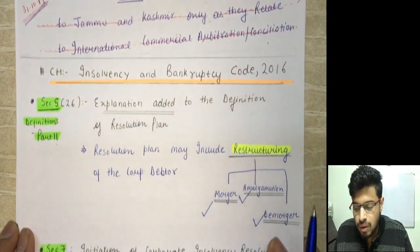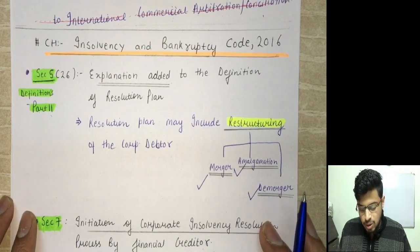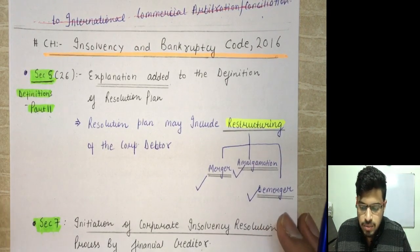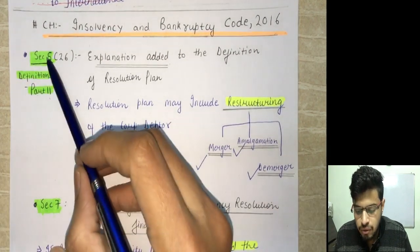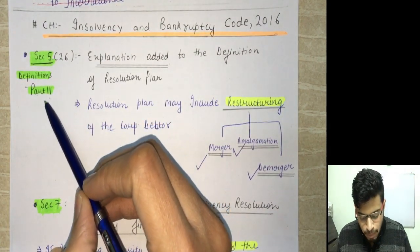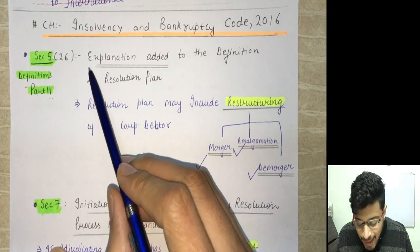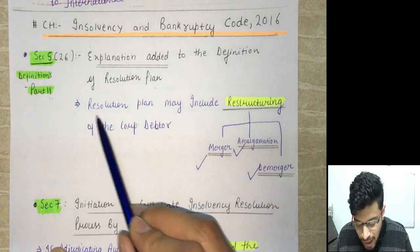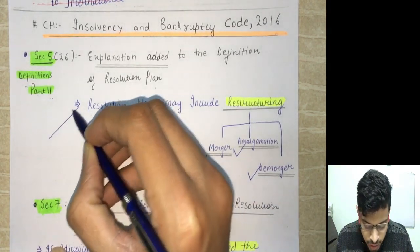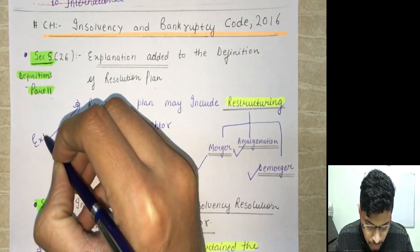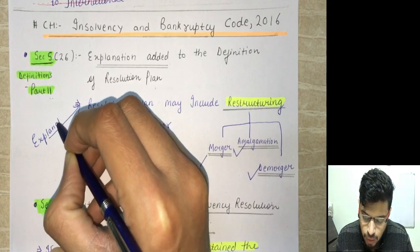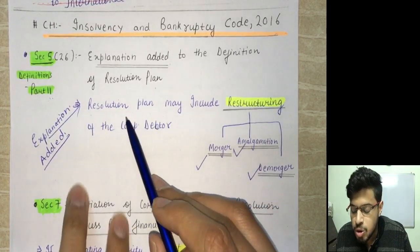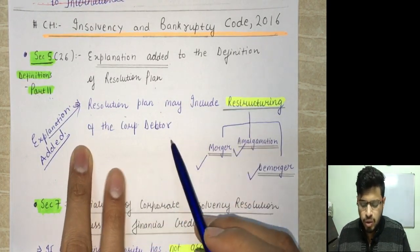Now coming to one of the most significant amendments: the Insolvency and Bankruptcy Code. Section 5, which deals with definitions applicable to Part 2, has had an explanation added to the definition of 'resolution plan.' A resolution plan may include restructuring of the corporate debtor, and restructuring means it may be a merger, amalgamation, or demerger.